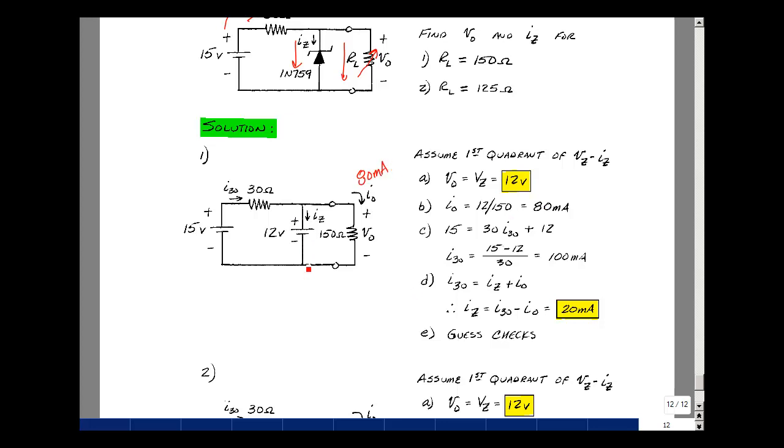Now, how much current is in the Zener? I can't get that directly, but if I knew the current in the resistor, I could solve for it. Let's go around the loop. The rise in voltage is 15, the drop would be 30 ohms times I of 30 plus 12. I can solve that equation: it's 15 minus 12 divided by 30, and that's 100 milliamps.